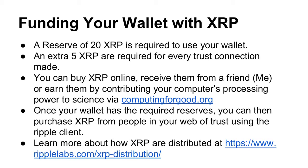Once your wallet has the required reserves, you can then purchase XRP from people in your web of trust using the Ripple client. Right now, people that are in my web of trust for hours can trade their hours with me for Ripples. Essentially, they can purchase things at Target or Whole Foods using their hours. You can go to Walmart and use your hours, although we'll be discouraging people from taking the hours out of the community if possible. You can learn more about how XRP are distributed on the Ripple Labs website.